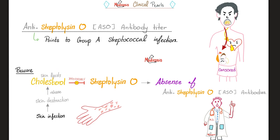Why might ASO be negative? Because cholesterol in the skin irreversibly inhibits Streptolysin O, which means you will not make antibodies against it because you were never exposed to it. Since rheumatic fever can only be caused after a throat infection — never a skin infection — your throat does not have cholesterol, so Streptolysin O is not blocked, meaning ASO is more likely to be positive with heart disease. But in kidney disease, the infection could be coming from the throat or from the skin. If from the throat: positive ASO titer. If from the skin: negative or low titer, because skin lipids and cholesterol inhibit Streptolysin O. That's why ASO antibodies are positive in rheumatic fever but may or may not be positive in acute post-streptococcal glomerulonephritis — something your professor may not explain.